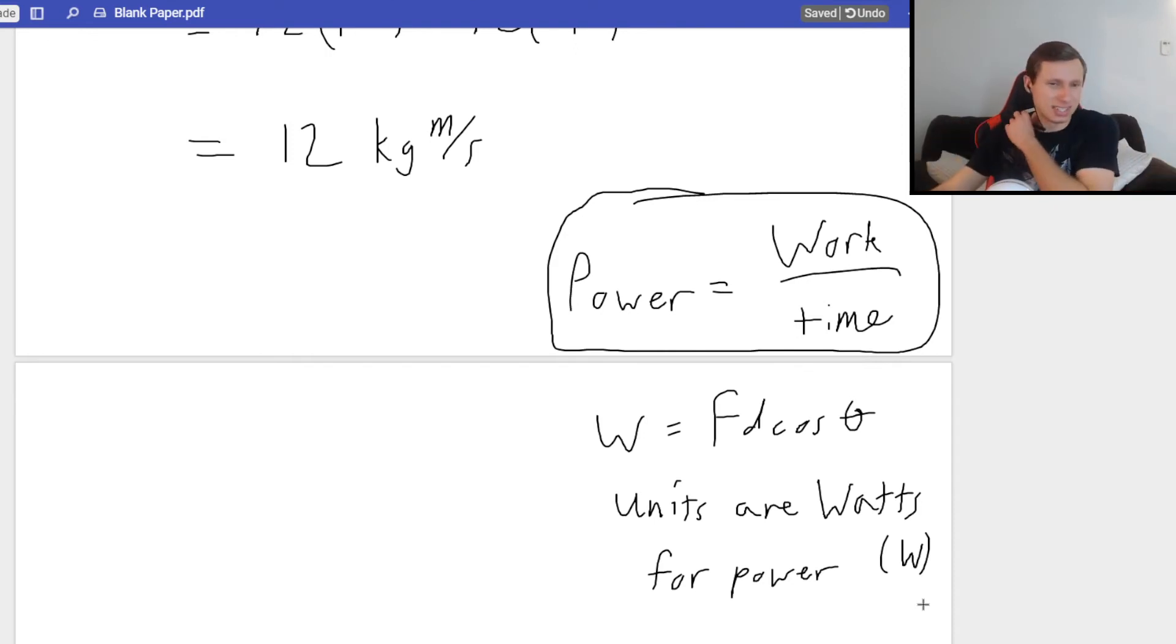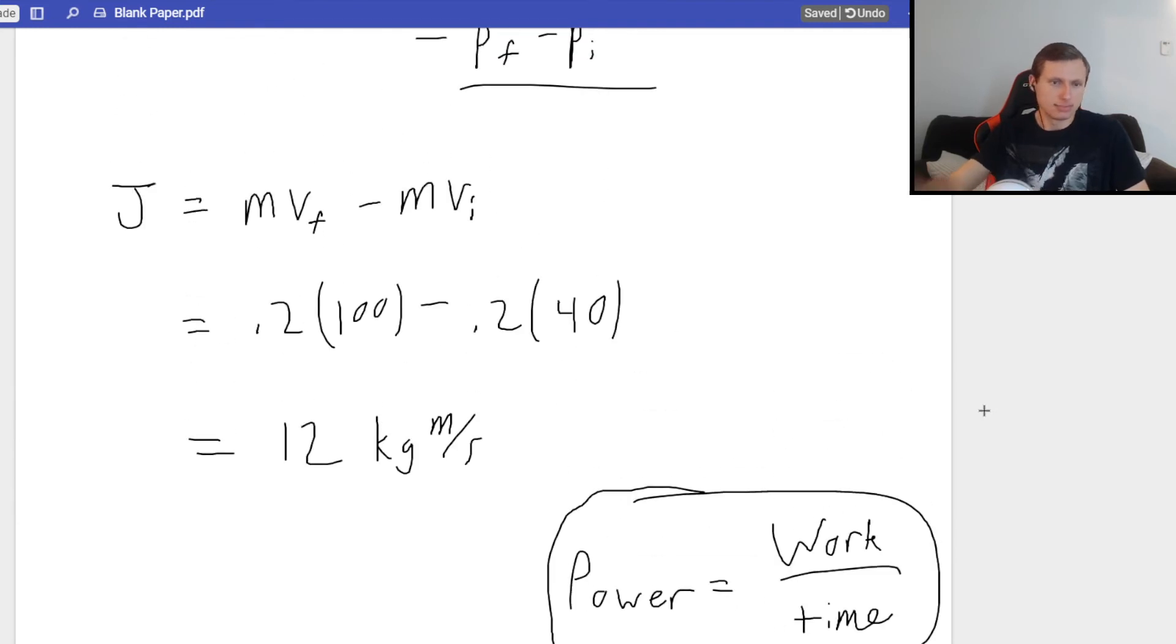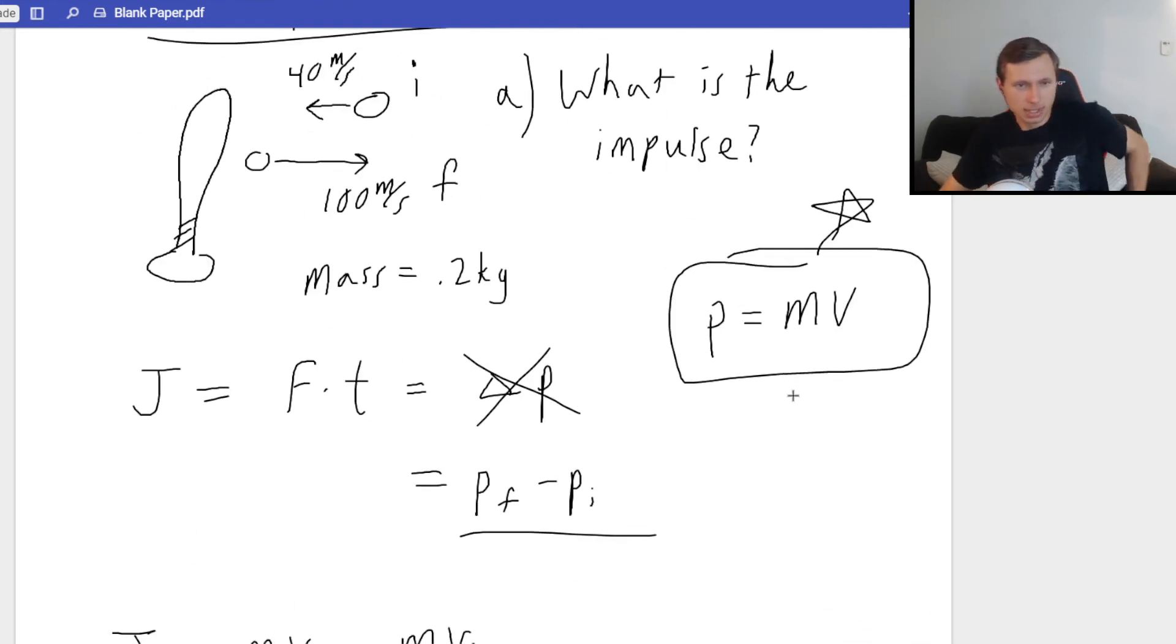Why is 12 kilogram meter per second wrong? I'm going to scroll up back to my work. Why is that wrong? And why will all of you fail the test tomorrow? Hopefully not. Remember what I said about momentum. The direction matters. One of these velocities is going to be negative. Which one?